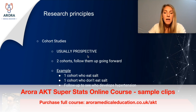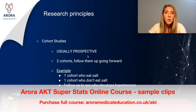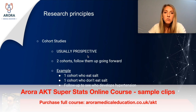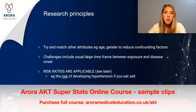Cohort studies are usually prospective — we go forward in time. We take two cohorts, follow them up, and see what happens. For example, a cohort of people who eat salt and another who don't, followed up to see who develops hypertension. Because you have an exposed and an unexposed group, it's like having a control group, but different to a case-control study because we follow patients prospectively. You can try to match attributes like age and gender to reduce confounding factors.